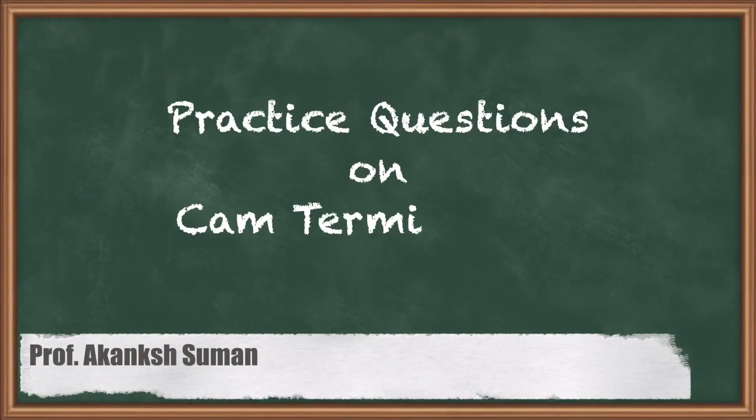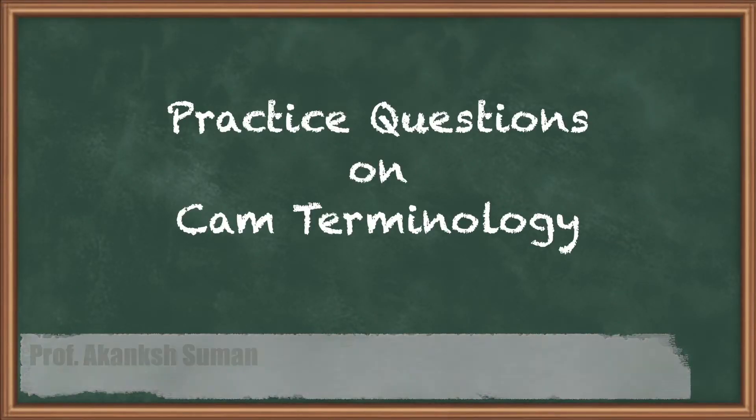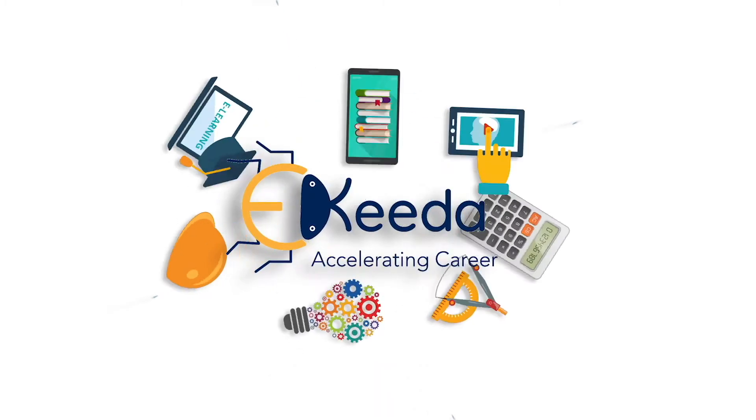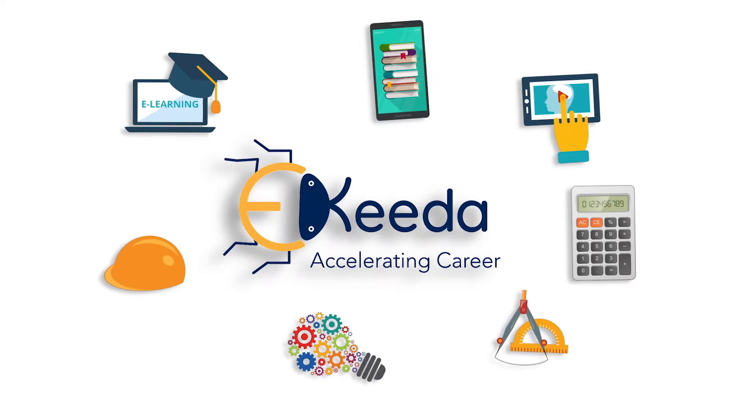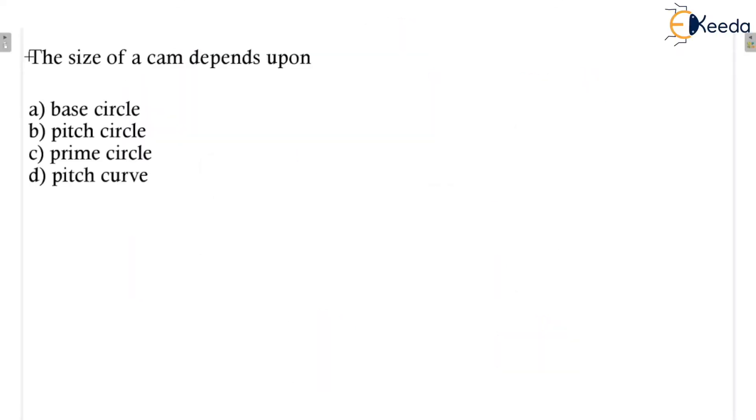We are going to discuss the next questions of CAM terminology. The size of the cam depends upon the base circle — the smallest circle of the cam. When you go to the shop and ask for a cam, you have to tell them the size, which means the diameter or radius of the base circle. This is the most important circle of the cam, so the size of the cam is specified by the base circle — option A is the correct answer.